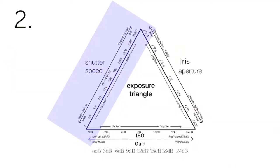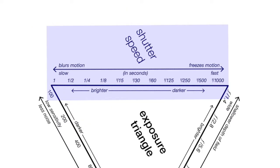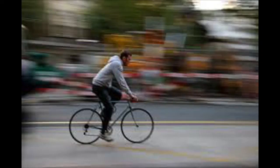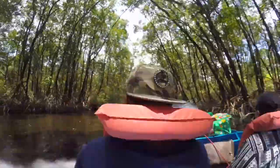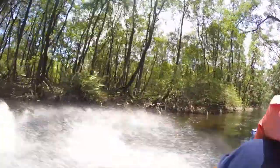Shutter speed is usually set at twice your frame rate. If you shoot at 24 frames per second, set your shutter speed at 48 or 50. Slowing the shutter will allow more light in but could result in blurred motion. Speeding up the shutter attenuates the light but can result in a stilted image.